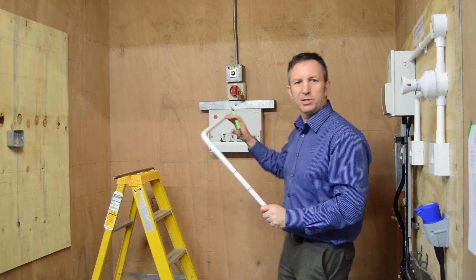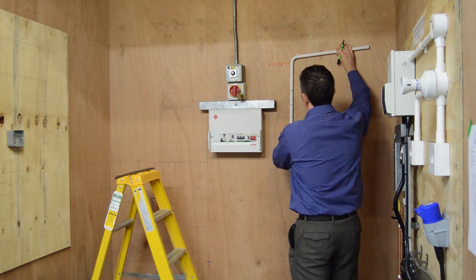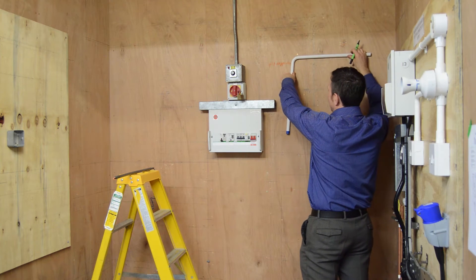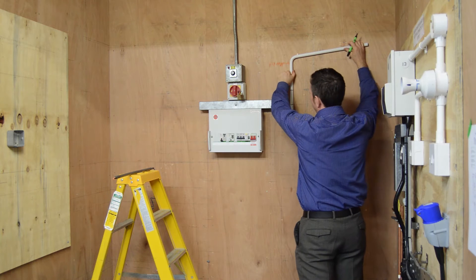Then what we've got to do is place our conduit back against the wall. Once we place it back against the wall, making sure that's kept at a right angle and that is vertical.